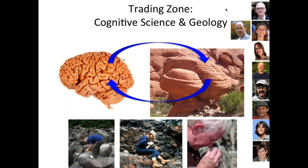The blue arrows in the center of this image represent the interactions that occur within a trading zone. On the left is the cognitive scientist trying to take what we know about the brain and apply it to learning in geology. On the right are Mike and Nicole, who take what they know about geology and bring it back to tell us something about how the mind works. The network has been designed so that we work closely together.